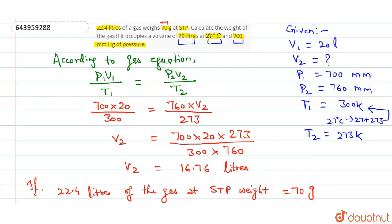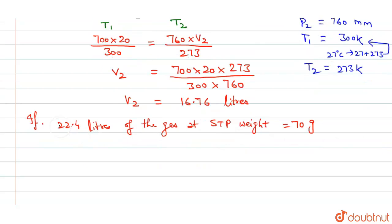So if 22.4 liters of the gas at STP weighs 70 gram, we have the volume as 16.76.